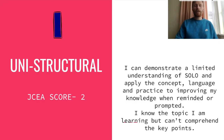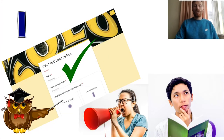If you're at a uni-structural stage, or a JCA score of two: I can demonstrate a limited understanding of SOLO and apply the concept, language and practice to improving my knowledge when reminded or prompted. I know the topic I'm learning but can't comprehend the key points. At this stage, you know the topic or one key piece of language used and what it means, you know the SOLO level you're at but not why, and you don't put your hand up to share ideas in class.